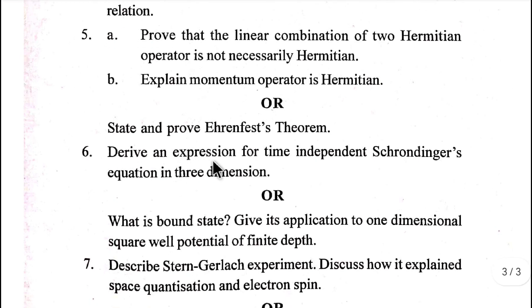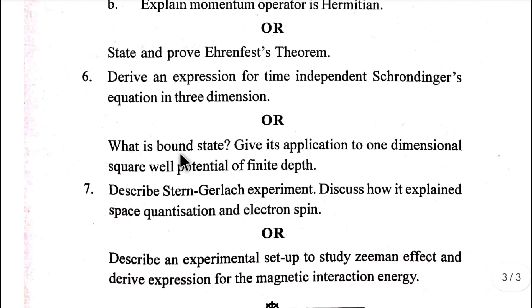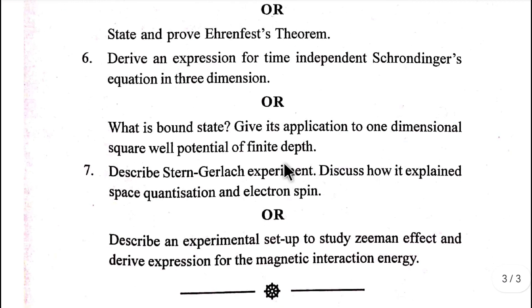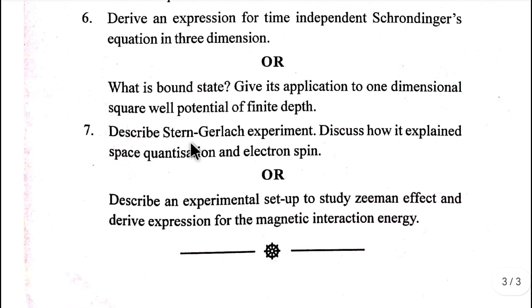Derive an expression for the time-independent Schrödinger equation in three dimensions. Section D: What is bound state? Give its application to one-dimensional square well potential of finite depth. Describe Stern-Gerlach experiment. Discuss how it explains space quantization and electron spin.